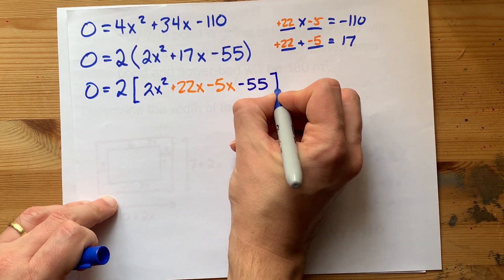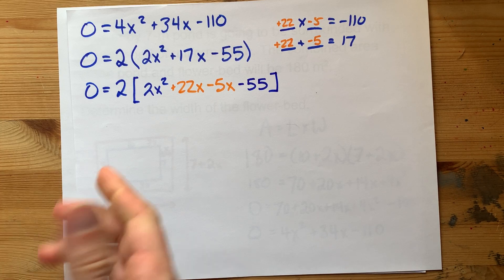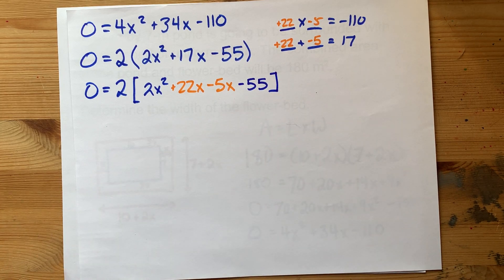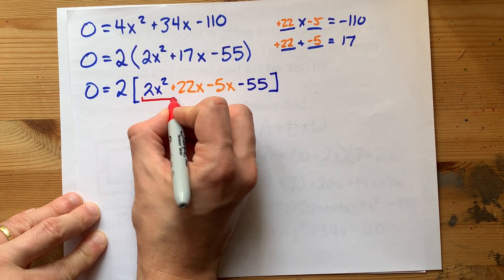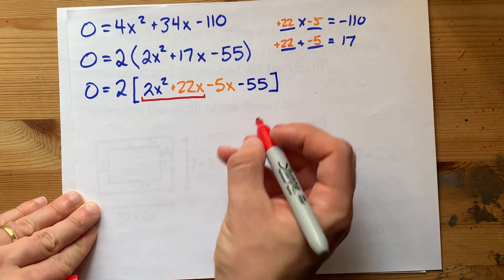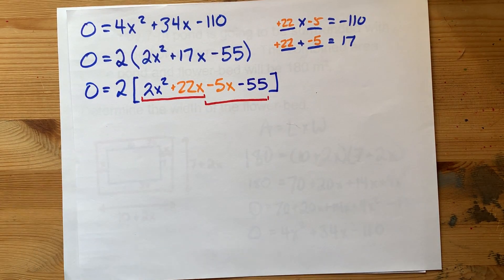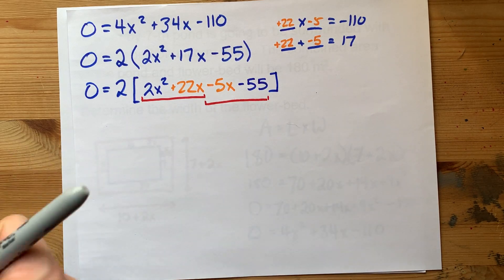Does that ring a bell for you? It means pull a common factor of the first two terms here. And pull a common factor of the first two terms here. I'm going to keep going.